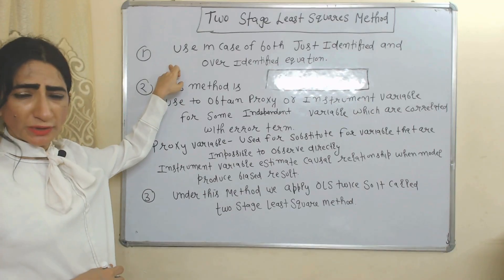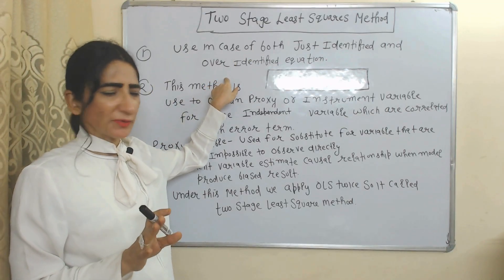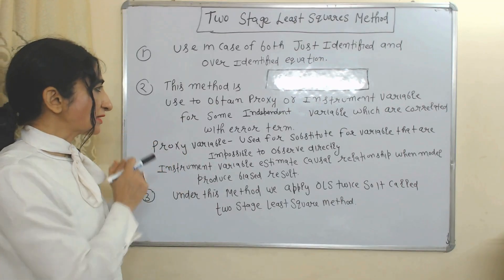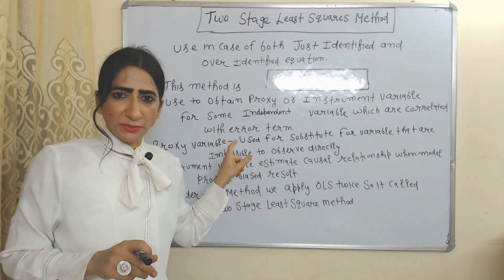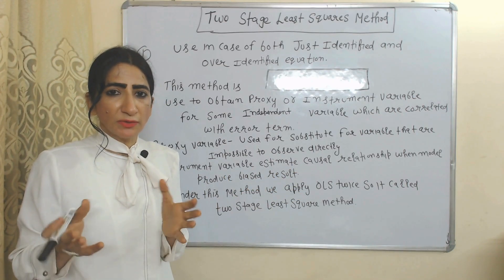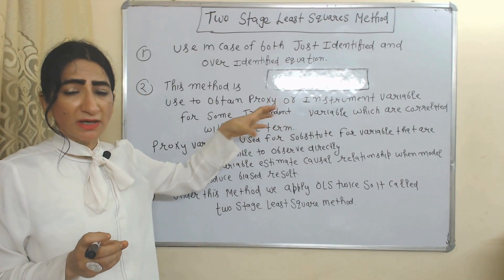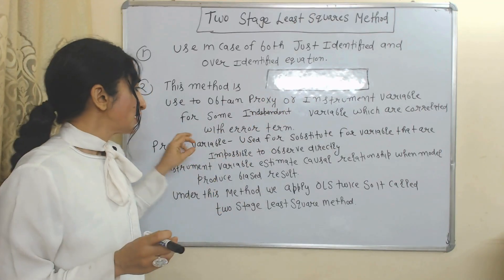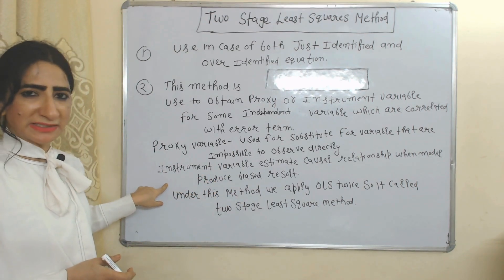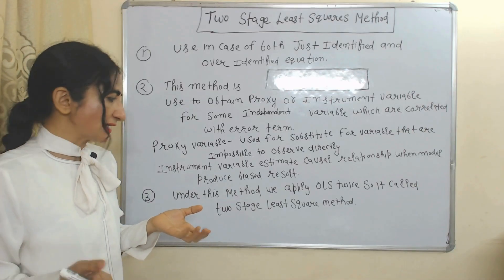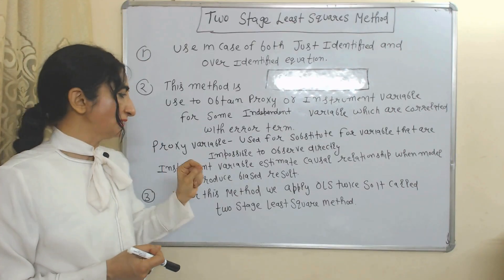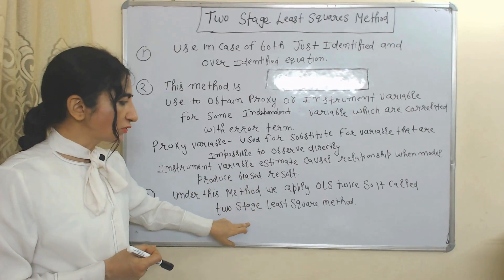Now we are going to talk about the Two-Stage Least Squares (2SLS) method. This method can be used in both just-identified and over-identified equations. We use it to obtain proxy and instrumental variables for independent variables that are correlated with the error term. Proxy variables substitute for variables impossible to observe directly, and instrumental variables estimate causal relationships when the model produces biased results. OLS is applied twice, hence the name Two-Stage Least Squares.